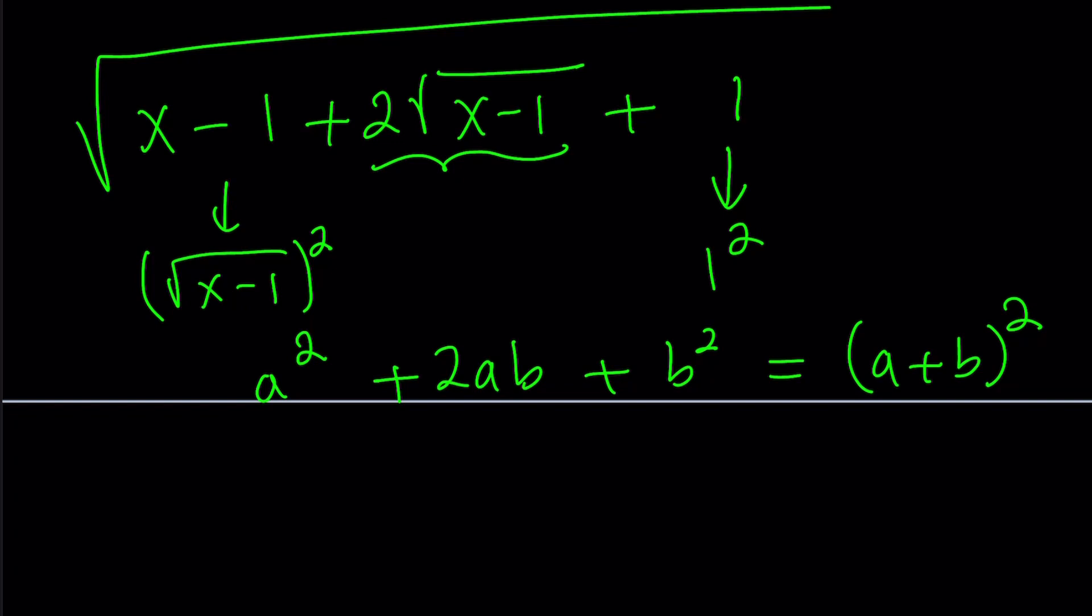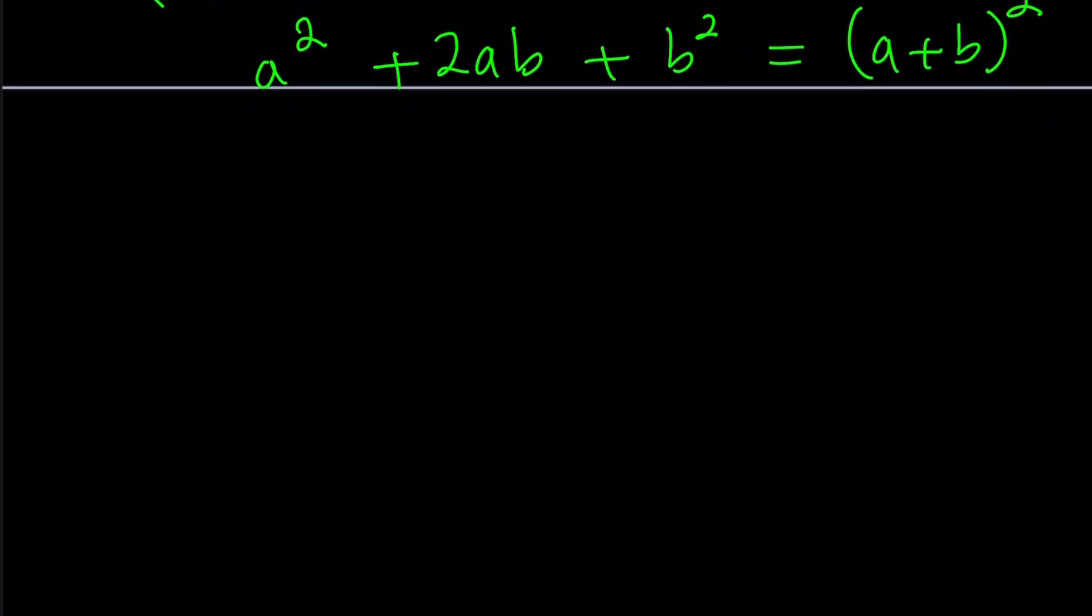Awesome. Let's go ahead and simplify this then. So I got square root of square root of x minus 1 plus 1 squared. How do you square root something squared? In other words, what is square root of a squared? And some of you might say, hey, this is a. We already know that.